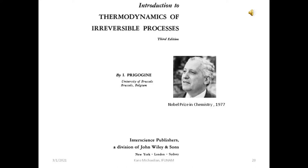We are going to study the book titled Introduction to Thermodynamics of Irreversible Processes, written by Ilya Prigogine. Prigogine won the Nobel Prize in Chemistry in 1977, specifically for the material contained within this book. Irreversible processes are almost all the processes occurring on the surface of our Earth and throughout the entire Universe. This material has a very wide range of applications and if you study it carefully, you will find it very useful in your career.